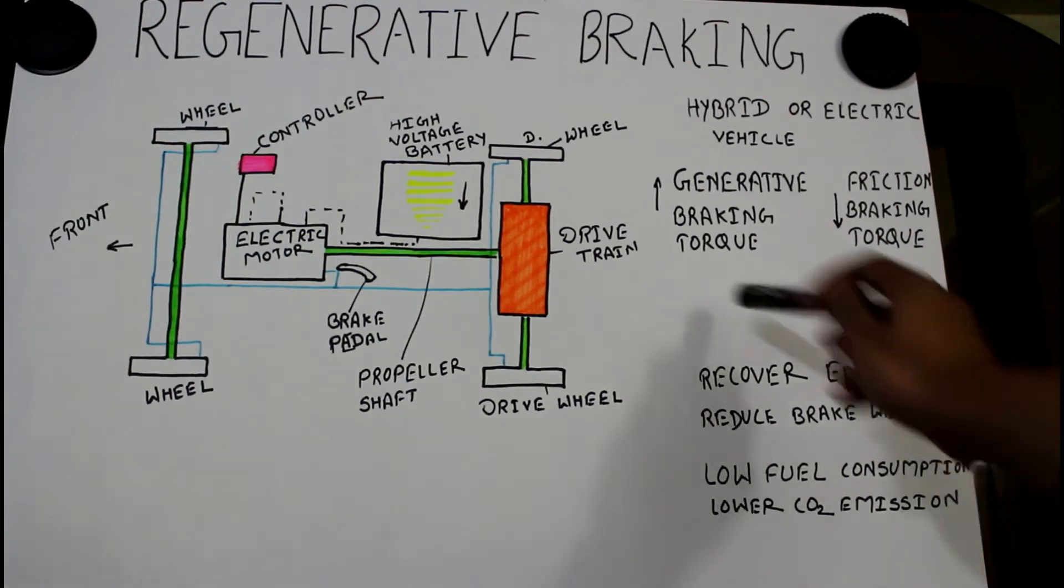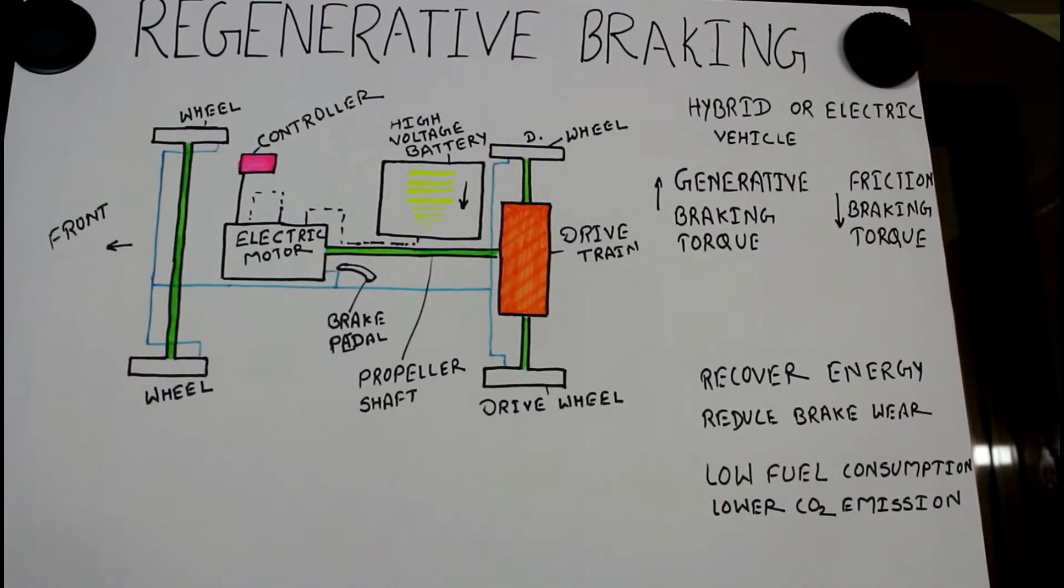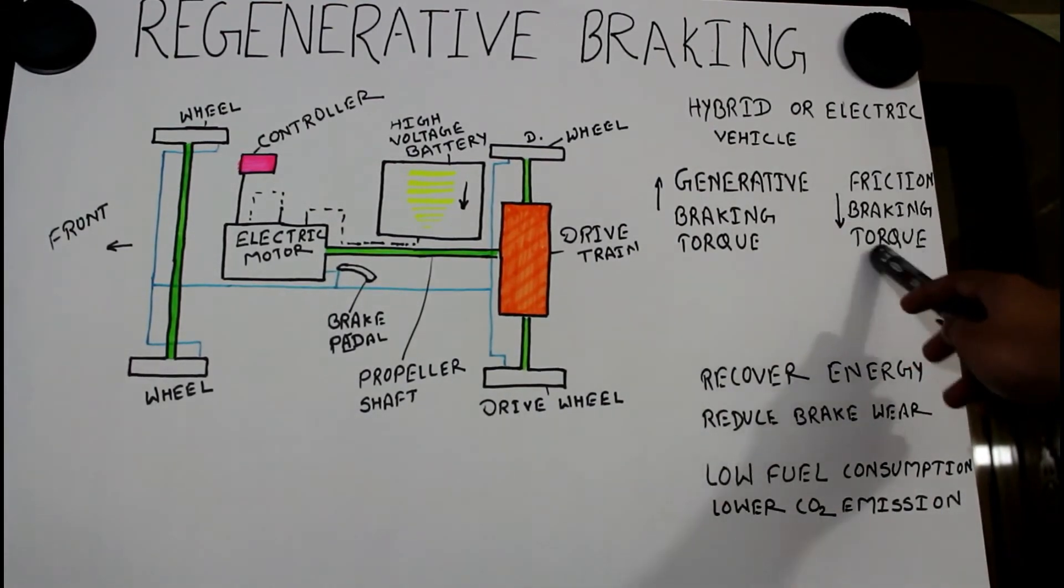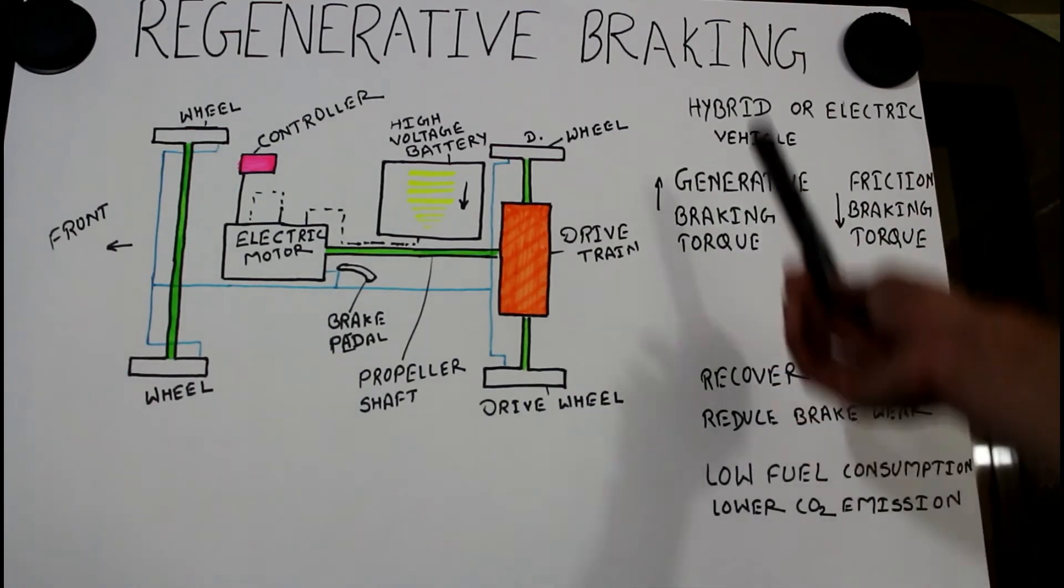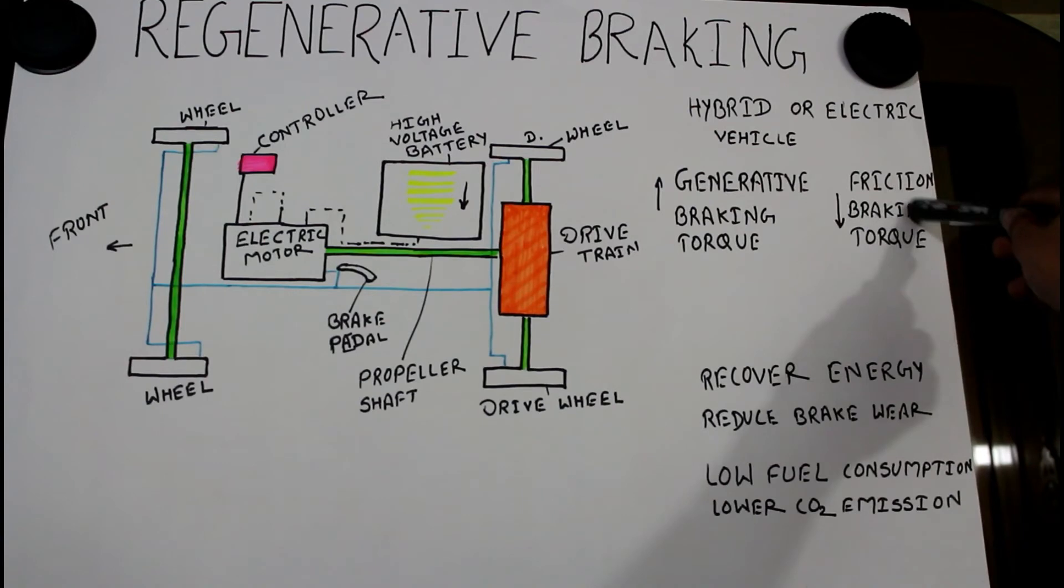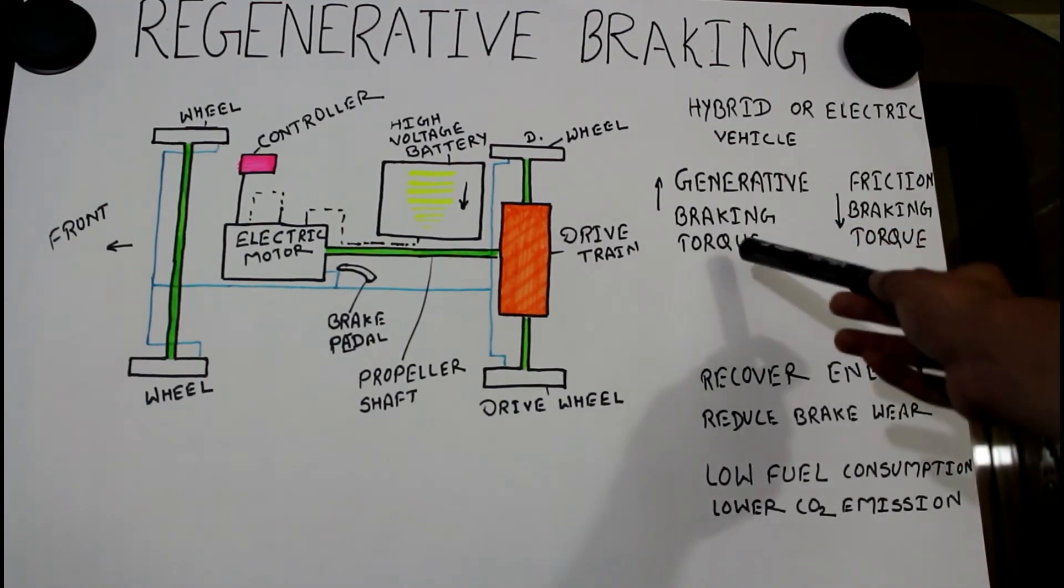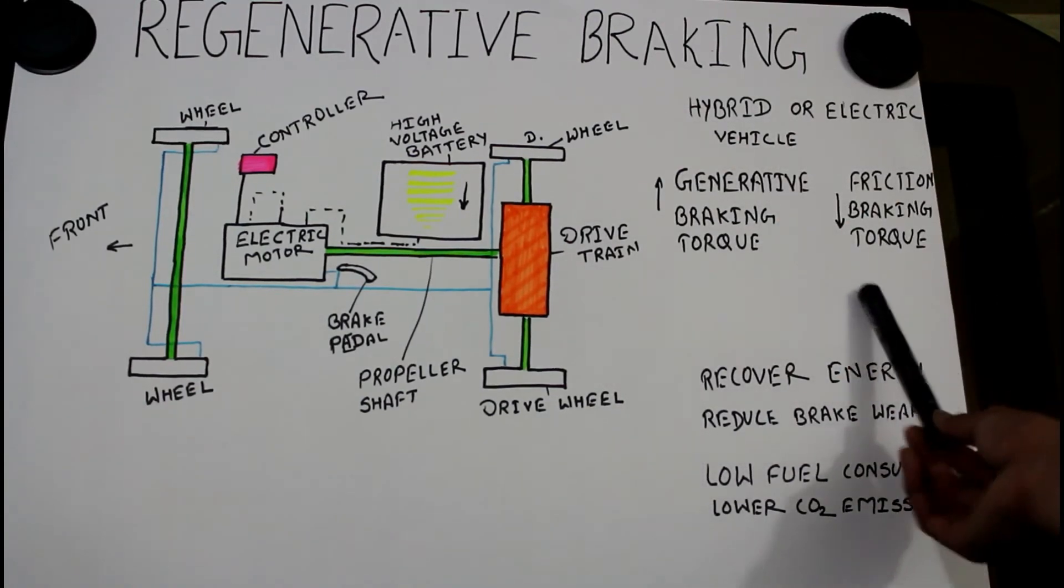Generative braking torque, which is the result of electrical motor to produce power, is inversely proportional to the friction braking torque. You can have a look here. If generative braking torque is increased, friction braking torque is reduced. But when the generative braking torque is reduced, friction braking torque will be increased.